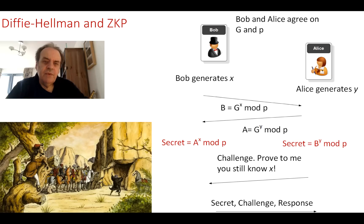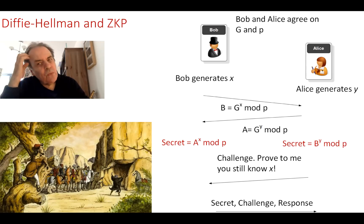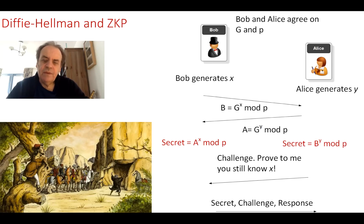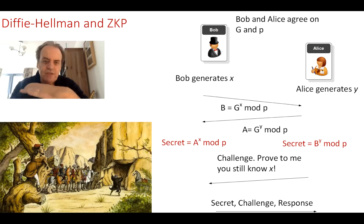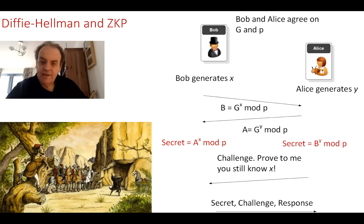We can advance this further by applying zero knowledge proof to the Diffie-Hellman method. In Diffie-Hellman, Bob generates a random value x and Alice generates a random value y. Bob calculates g^x mod p and Alice calculates g^y mod p using an agreed generator g and prime p. They exchange values, and Bob calculates the shared secret key by raising Alice's value to the power of x, resulting in g^(x·y) mod p on both sides.